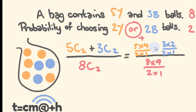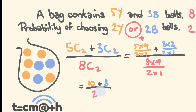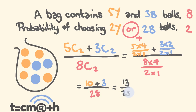The only difference here is this addition rather than multiplication. Working it out: the yellow part — 5×4 = 20, divided by 2 = 10. Added to the blue part: 3×2 = 6, divided by 2 = 3. The denominator: 8×7 = 56, divided by 2 = 28. So 10+3 = 13, over 28. The probability is 13 over 28.